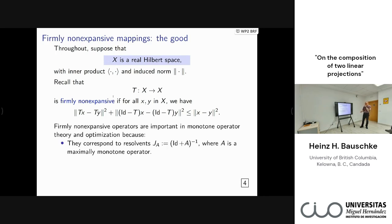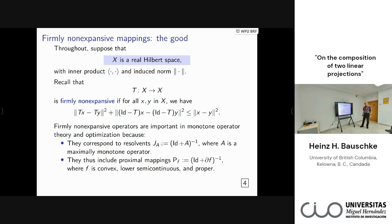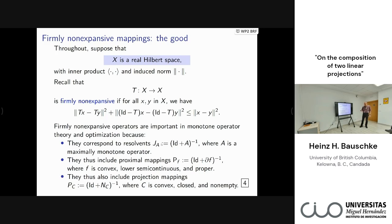These operators show up in monotone operator theory and optimization because they correspond to resolvents: (I + A)⁻¹ is a beautiful operator that is single-valued and has this property. They include proximal mappings — very important operators in optimization when you minimize problems where some pieces feature non-differentiable functions. If you have constraints, the projection mapping is an example that has this property. So there are a lot of examples of these operators.